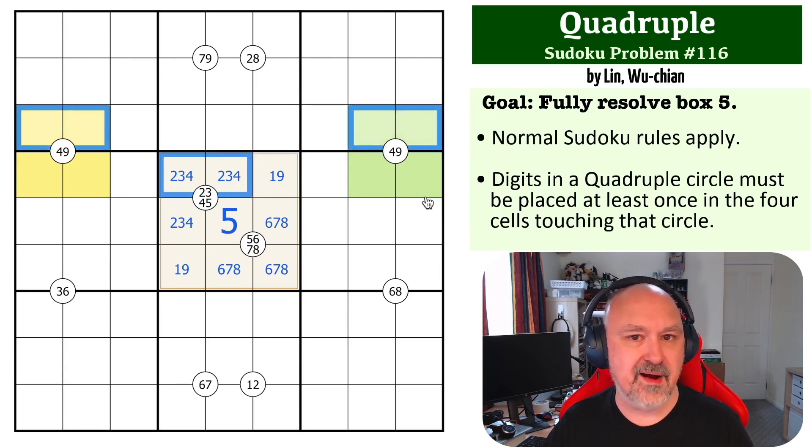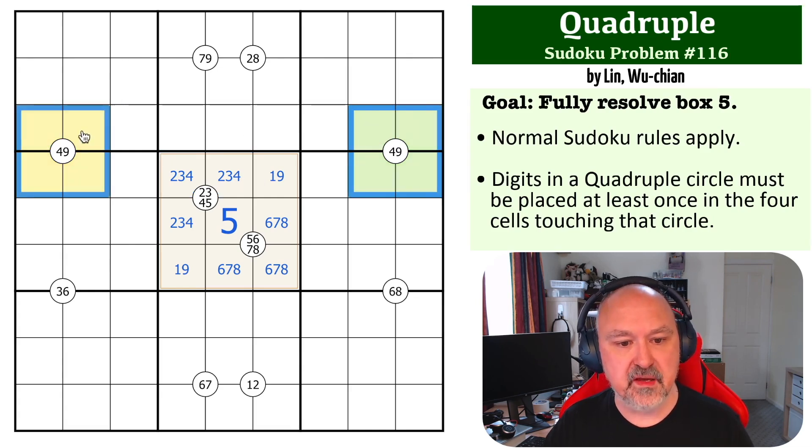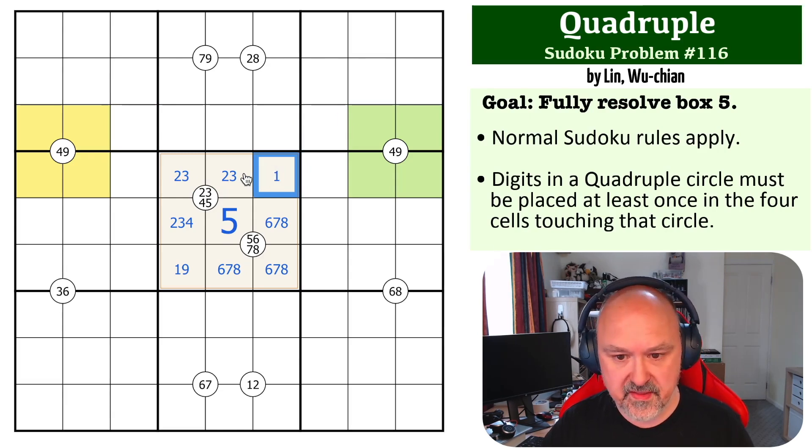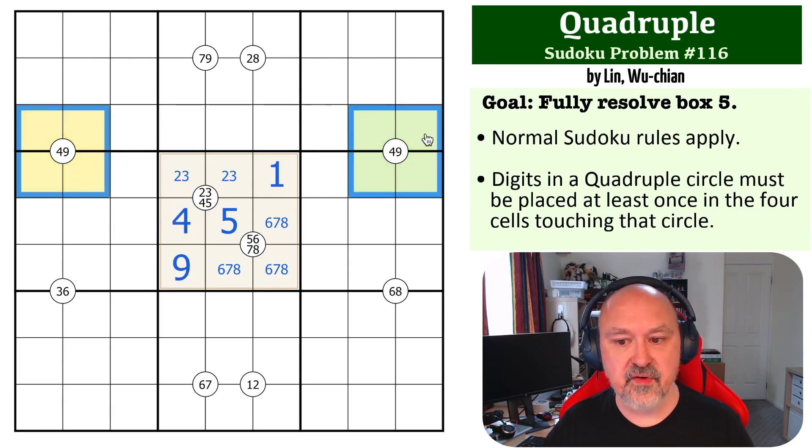Because of these overlapping clues, we can only put, we can't put four or nine into any of these cells. So we can't put four there, we can't put nine, can't put nine there. This becomes the one, this becomes a nine by Sudoku, and the two-three here means this has to be the four.